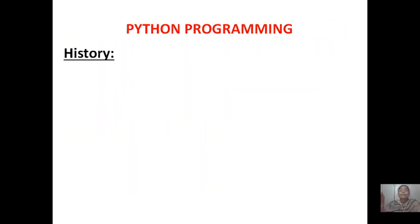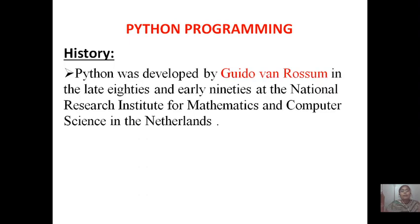What is the history of Python programming? Python was developed by Guido van Rossum in the late 80s and early 90s at the National Research Institute for Mathematics and Computer Science in Netherlands.